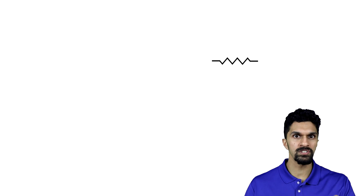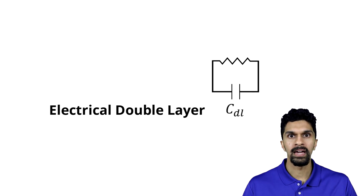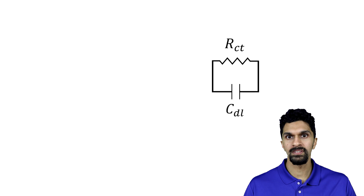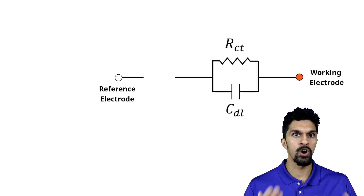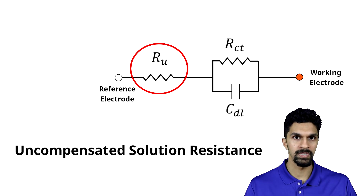Let's start off by reviewing the Randle circuit from our IR drop video. By understanding the Randle circuit we'll have a better understanding of how the measurements for determining the solution resistance actually work. In our Randle circuit, the working electrode interface is modeled as a resistor and a capacitor in parallel, where the capacitor CDL represents the electrical double layer and the resistor RCT represents the charge transfer resistance. Between the working and reference electrode there is another resistor RU, which represents the uncompensated solution resistance, and it is this RU that we are ultimately interested in determining.